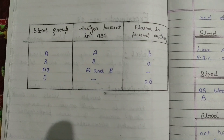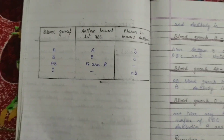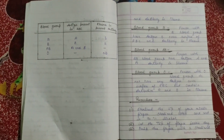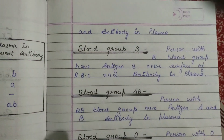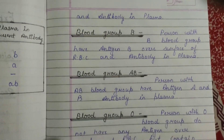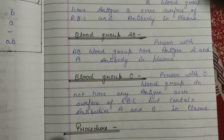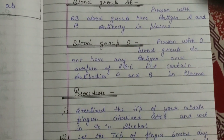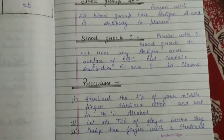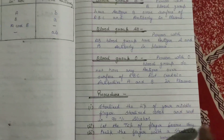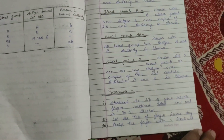There is a table showing blood groups with antigen present, plasma, and antibody present. Different types of blood groups and their headings are mentioned, with information written about each of them.